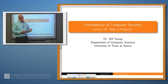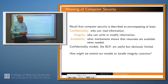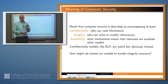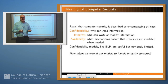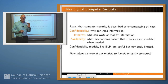Welcome back. Today we're going to start on an entirely new topic. We're going to talk about integrity and what integrity is. You remember that when we first started talking about computer security, we said there were three big topics in security: confidentiality, integrity, and availability. We spent a lot of time talking about confidentiality and models of confidentiality like Bell and LaPadula and non-interference. Today we want to talk about how you might develop a similar modeling framework for integrity.